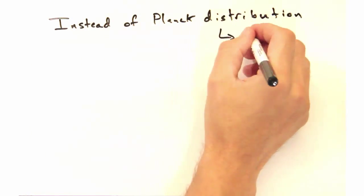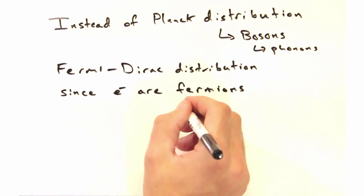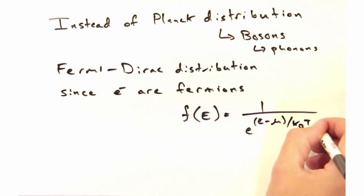Yeah, it is. But instead of the Planck distribution, we'll use the Fermi-Dirac distribution, since electrons are fermions. And what's nice is that because we're dealing with fermions,